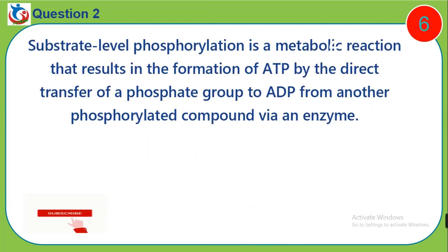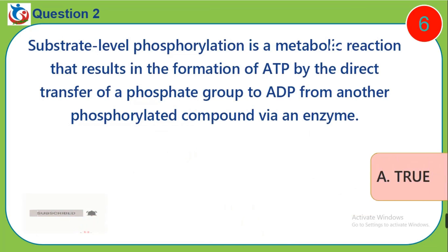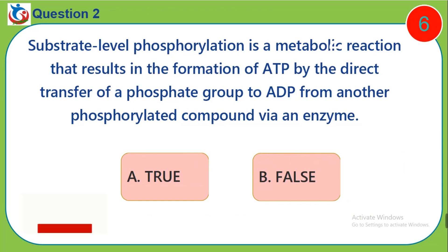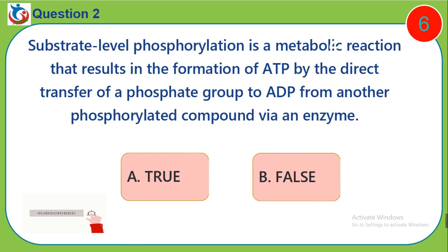Question 2. Substrate-level phosphorylation is a metabolic reaction that results in the formation of ATP by the direct transfer of a phosphate group to ADP from another phosphorylated compound via an enzyme. Is it true or false?